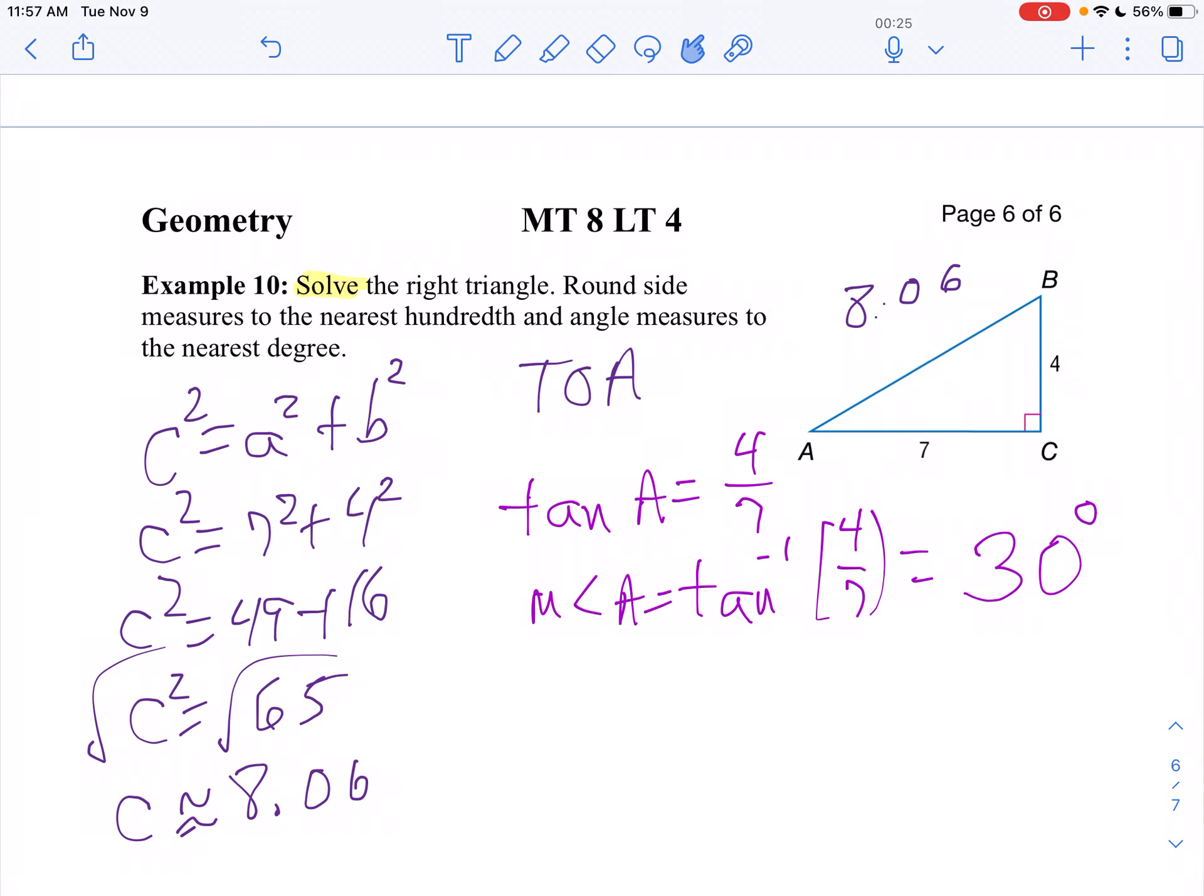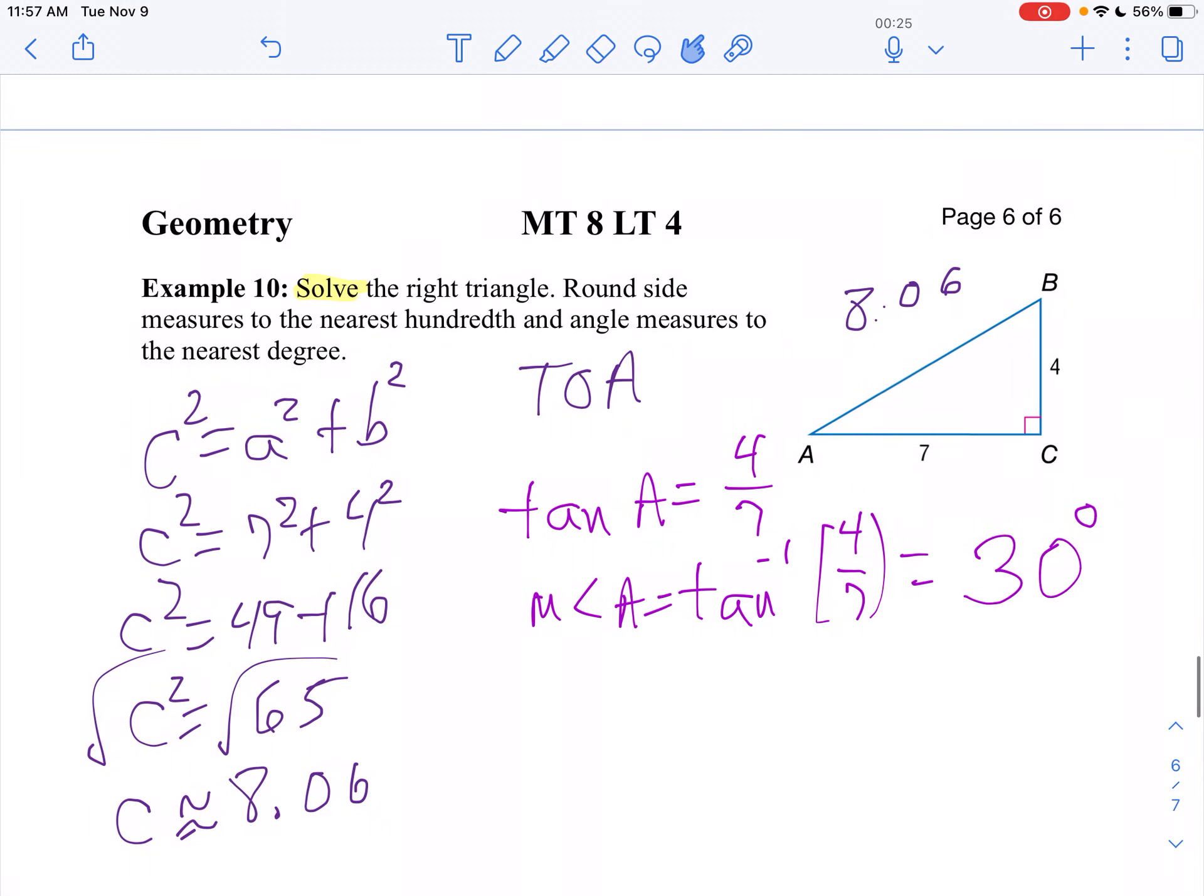Now I know angle A and angle B are complementary. I don't have to use my trig at all then because I know A and B have to add to 90. So the measure of angle B is 60 degrees.